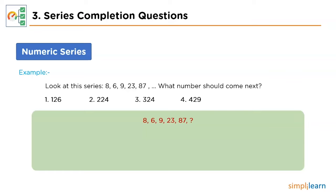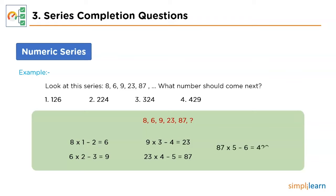We can derive the second term from the first by representing it as 8 × 1 − 2. Then 6 × 2 − 3 gives the third number. This suggests we are increasing each breakdown by 1. Then 9 × 3 − 4 = 23, and 23 × 4 − 5 = 87, confirming the pattern. Therefore, the next term will be 87 × 5 − 6 = 429.